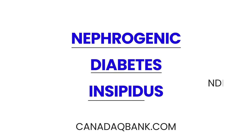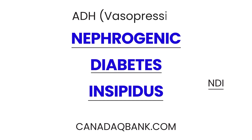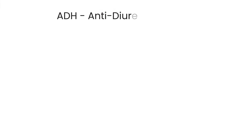Nephrogenic diabetes insipidus involves a hormone known as ADH, also known as vasopressin. It's very important to first understand what ADH does. ADH stands for antidiuretic hormone. A diuretic is something that makes you urinate, so antidiuretic is the opposite.